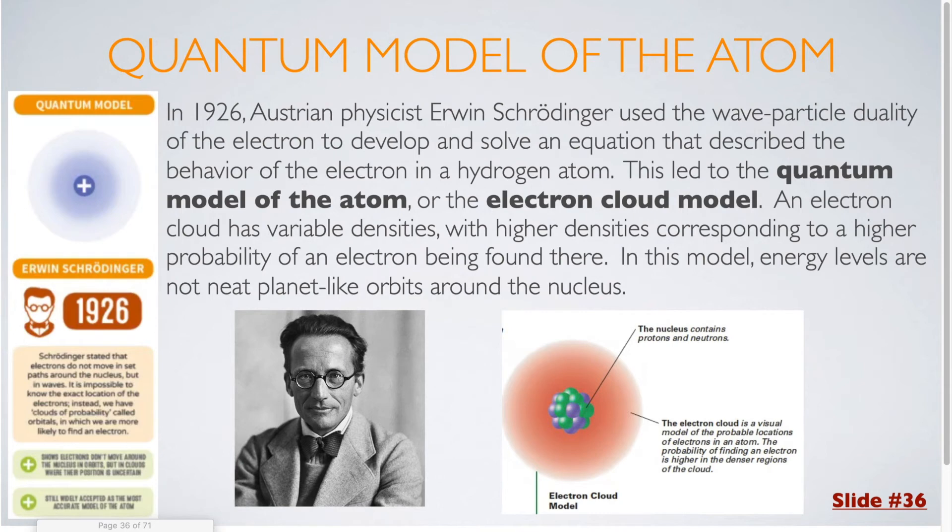An electron cloud has variable densities, with higher densities corresponding to a higher probability of an electron being found there. In this model, energy levels are not neat like orbits around a nucleus like what we saw with the Bohr model. You can see here how the electrons are just kind of a cloud of probable potential that are surrounding the nucleus.